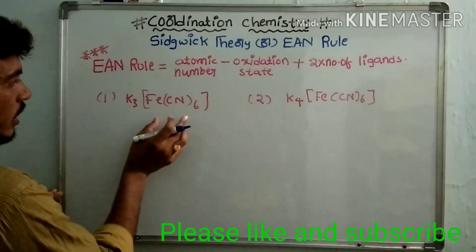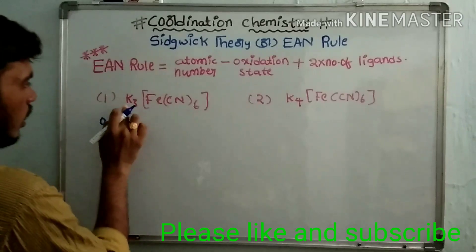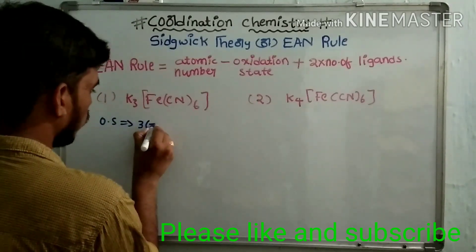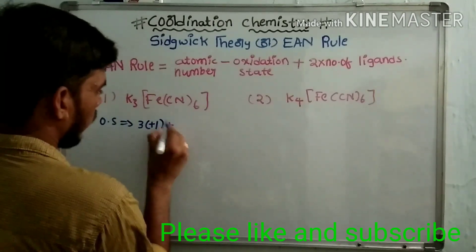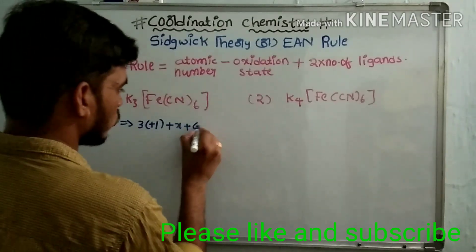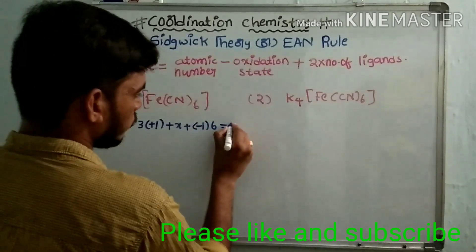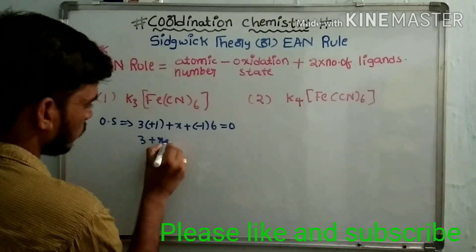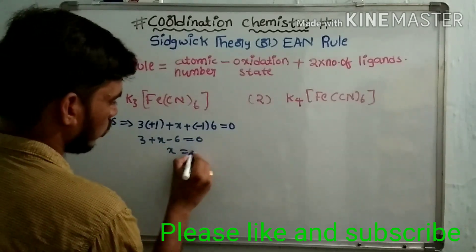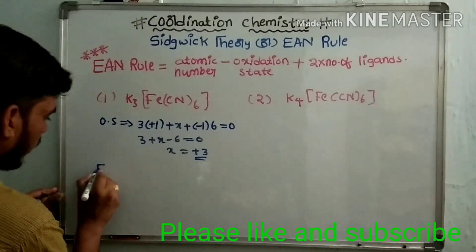For the first complex K₃[Fe(CN)₆], we find the oxidation state of the central metal atom. Potassium has a plus one oxidation state, and cyanide (CN⁻) has a minus one oxidation state. So: 3(+1) + x + 6(−1) = 0, giving 3 + x − 6 = 0, therefore x equals plus three.